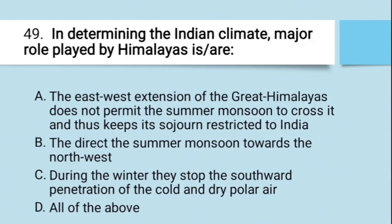Question: In determining the Indian climate, what major role is played by the Himalayas? A. The east-west extension of the Great Himalayas does not permit the summer monsoon to cross and keeps it restricted to India; B. Directs summer monsoon towards the northwest; C. During winter, stops the southward penetration of cold and dry polar air; D. All of the above. The right answer is D — all of the above are reasons the Himalayas play a major role in India's climate.